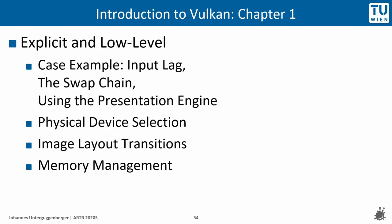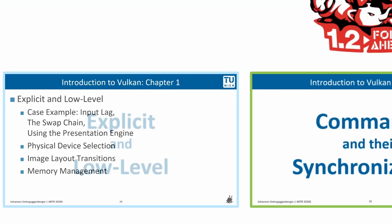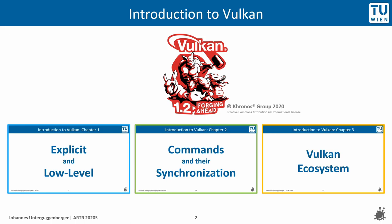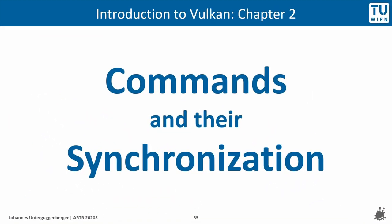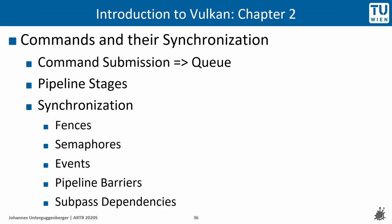This concludes chapter 1. We considered how input lag can be reduced and programmed explicitly with Vulkan, how we have precise control over which commands we send to which physical device, where the low-level Vulkan API draws the line of abstracting device access when discussing image layout transitions, and how Vulkan requires programmers to be explicit when managing memory. Let us now dive into chapter 2 — commands and their synchronization — covering how commands are submitted for execution on a device, how they transition through different stages, and the different types of synchronization primitives.